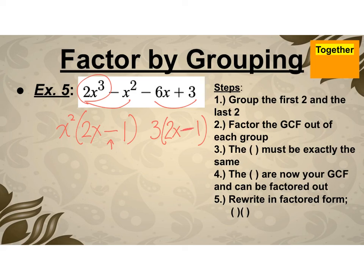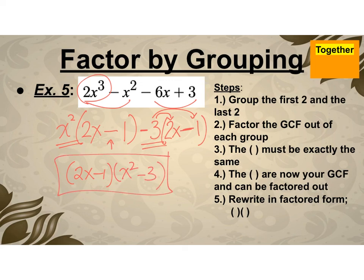Let's just check and make sure it works. Negative 3 times 2x is the negative 6x. Negative 3 times negative 1 is 3. So that is true. If you accidentally took out a positive 3 there you would have a negative 2 and a positive 1 and your parentheses would not look the same. So that's kind of like a self-checking spot within the problem. Now my parentheses are the same so I'm going to factor those out, 2x minus 1, and then whatever's left over goes back together in the other set of parentheses. And that is in factored form.